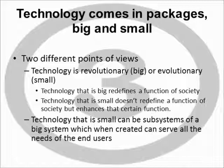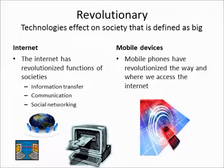Kranzberg's third law of technology states that technology comes in big and small packages. The two main points are that big and small technologies refer to revolutionary and evolutionary technologies, and that small technologies can be subsystems that, when put together, create a bigger system. Revolutionary technologies refer to big technologies that redefine a function of society — the internet and mobile devices are primary examples, as the internet has redefined information transfer, communication, and social networking.